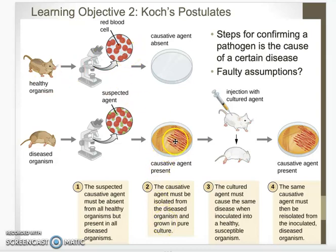Second, you can't always grow things in a lab. Our lab methods are pretty good, but they're never going to be exactly the same as what's inside a host — we can't recreate the exact environment. We can get close, but some microbes don't grow well in a lab, and some can't grow by themselves. For example, viruses can never be in a pure culture because they're always mixed with host cells. So sometimes the second step just doesn't work.